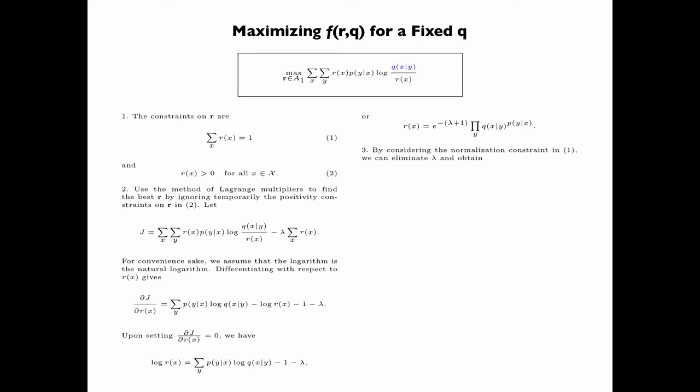By considering the normalization constraint in equation 1, we see that e to the power minus lambda plus 1 is actually the normalization constant. And so we can immediately obtain Rx equals the product here divided by summation of the same product with x replaced by x prime over all x prime.